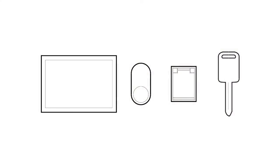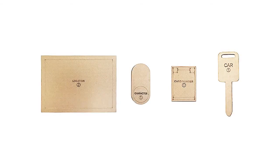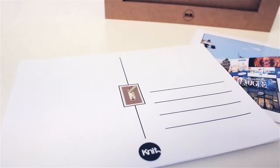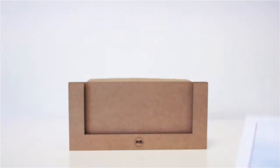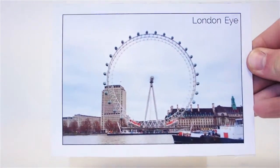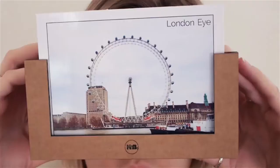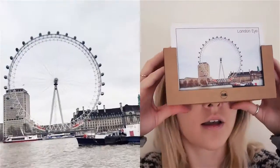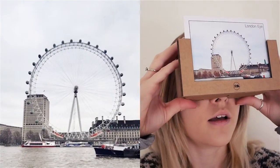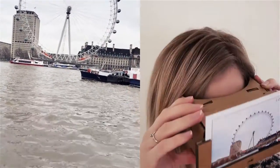This opens up the possibility of collectible objects for Google Cardboard. In this example, the object is a postcard. Each postcard transports the wearer to the location depicted on that card.